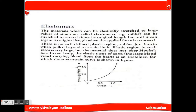Next are elastomers. The material which can be stretched to a large value of strain and still regain its original length is called an elastomer. Rubber can be stretched to several times its original length and still regain its original shape when the applied force is removed. However, rubber breaks when pulled beyond a certain limit. The elastic region in such materials is very large but the material does not obey Hooke's Law. The elastic tissue of large blood vessels carrying blood from the heart is an example, and the stress-strain curve for elastomers has a distinctive shape.